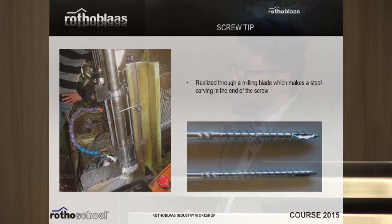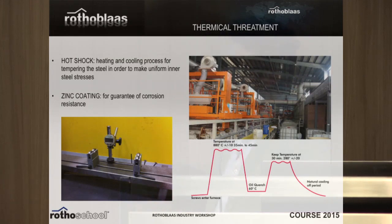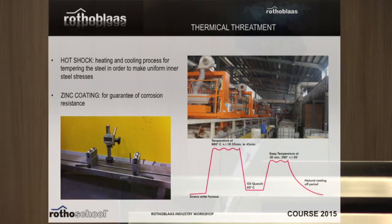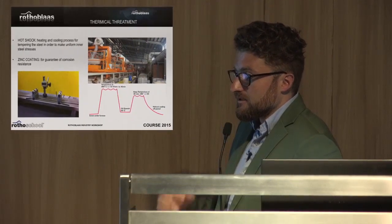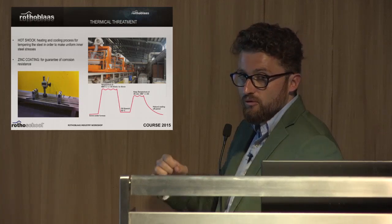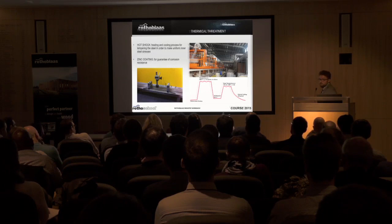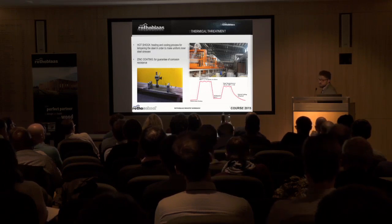This is why the screw can be self-drilling — you don't need any pre-drill. The technology must be carefully engineered to make sure the screw goes into timber fast. Then one of the most important processes is the hot shock and zinc coating. The steel has a resistance of about 600 N/mm² and with the hot shock we can increase the resistance of the steel while at the same time making it ductile — the steel must be able to bend about 45 degrees without brittle failure.